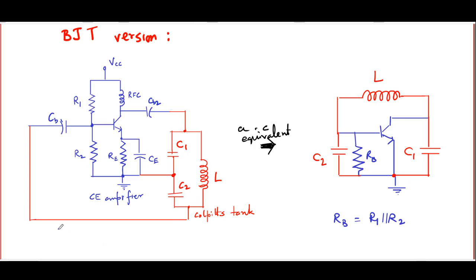C1 is connected between the collector and ground; C2 is connected between ground and the base. L is connected between the collector and the base — the input and output of the amplifier. We cannot simply borrow the earlier results because the BJT draws current, so the assumption that the feedback network is unloaded does not hold. We must analyze the AC equivalent circuit directly.